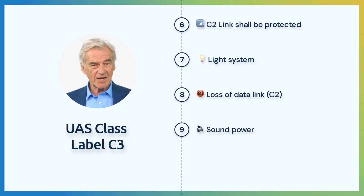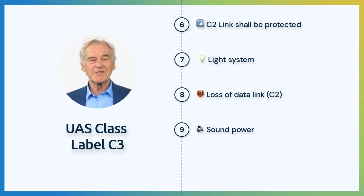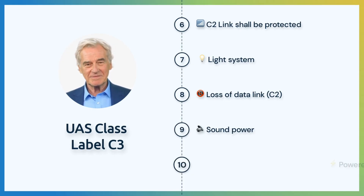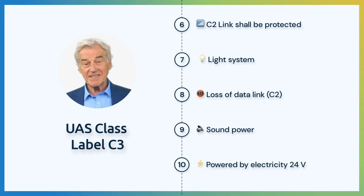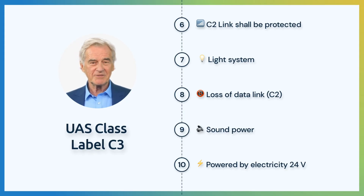It is not allowed for the UA to exceed sound levels detailed in Part 13. The UAS needs to be powered by electricity and has a maximum nominal voltage of 24 volts.